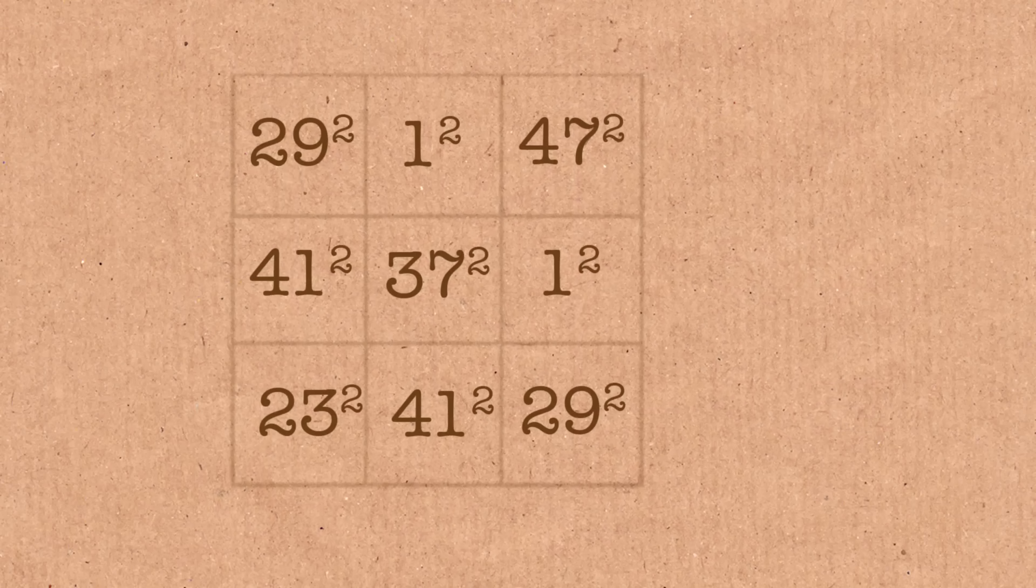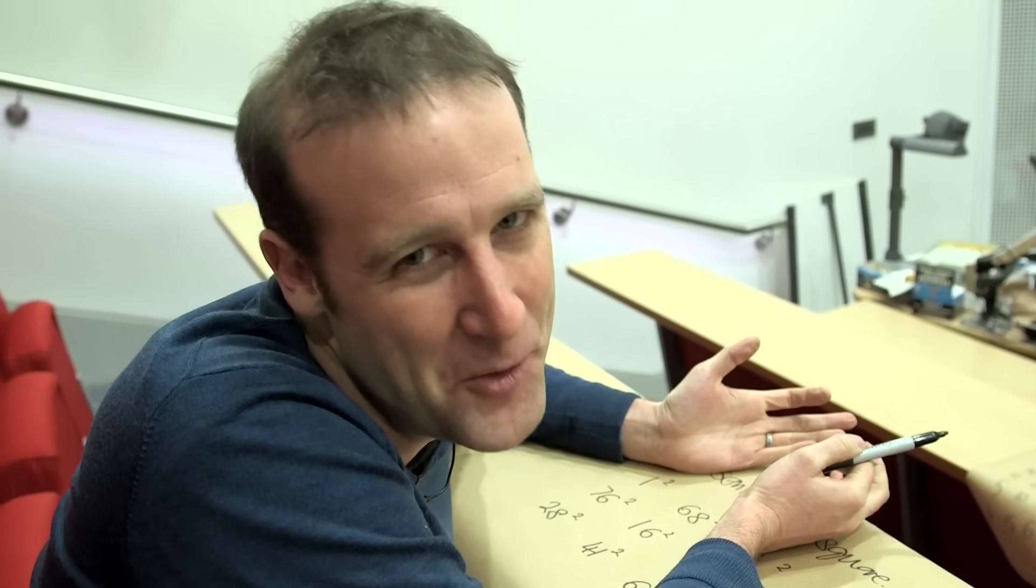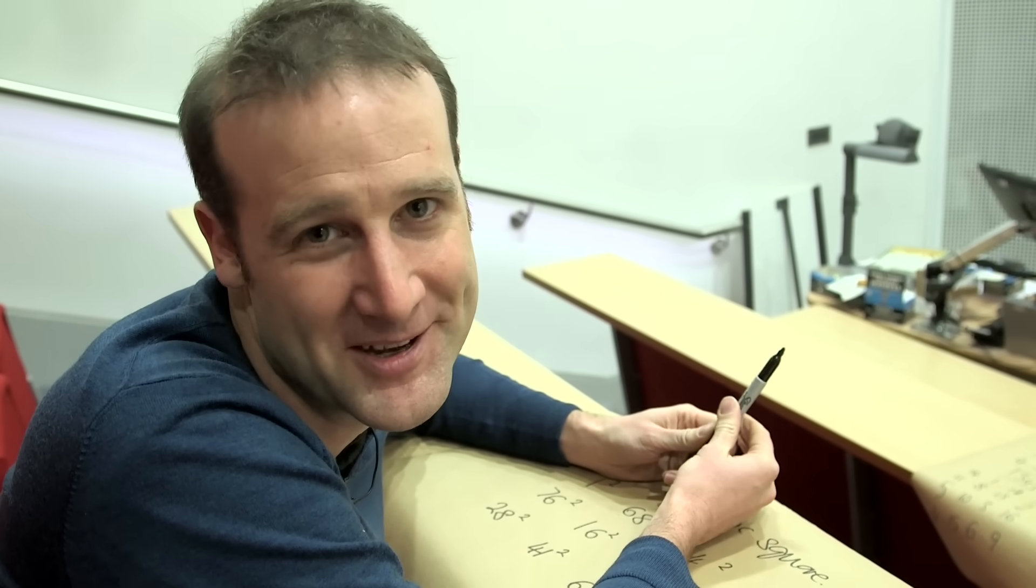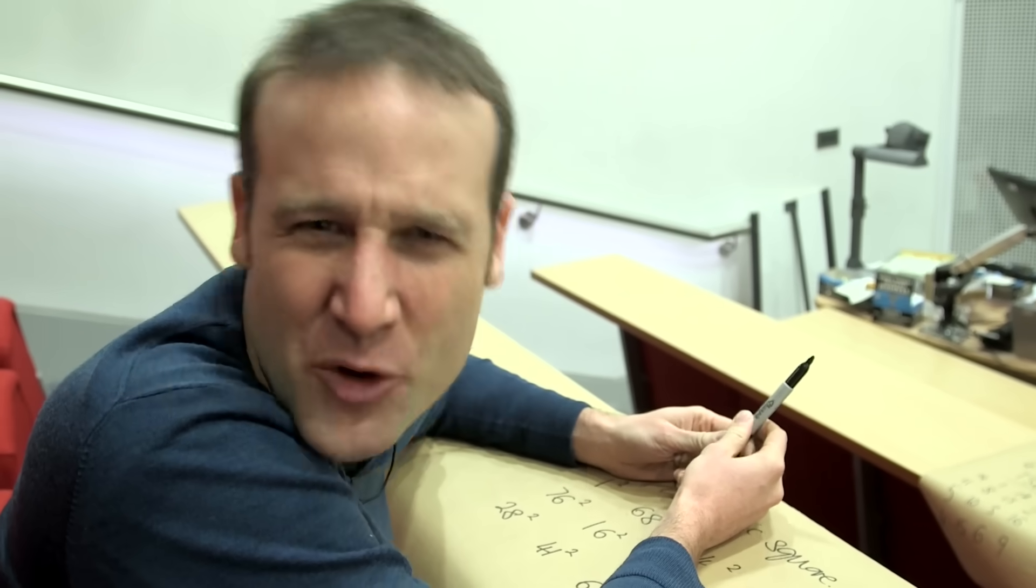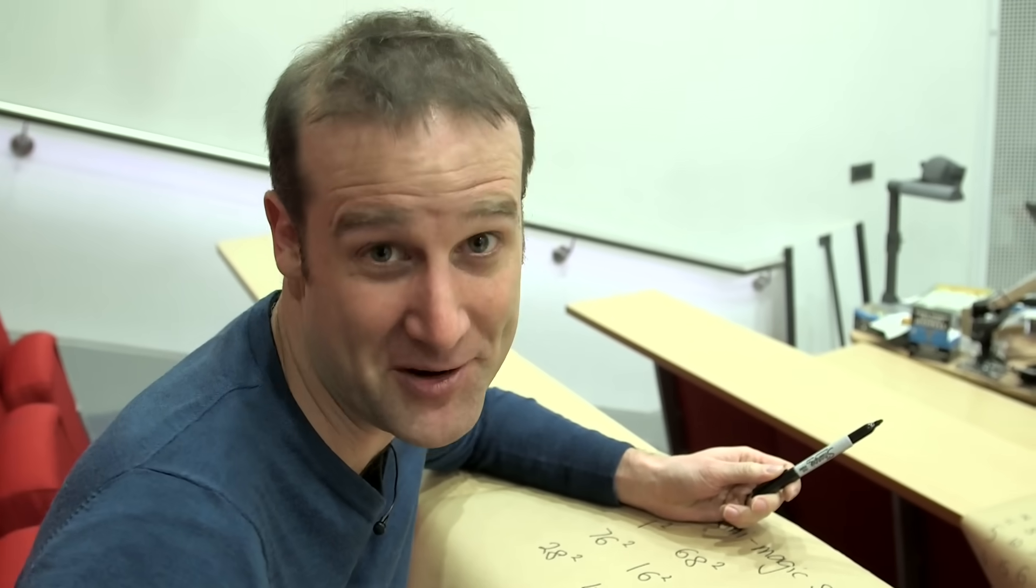Has it got a name? No it hasn't got a name. I don't want to call it the Parker square because it doesn't work properly. It would be like, oh that's a classic Parker square, or someone would do something that's almost right but not quite and they go that's a real Parker square kind of move. So I'm not calling it the Parker square.